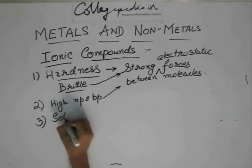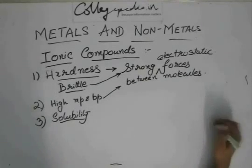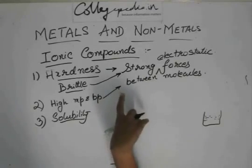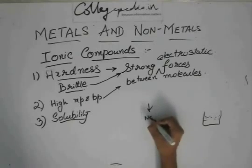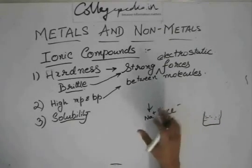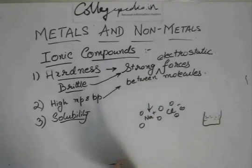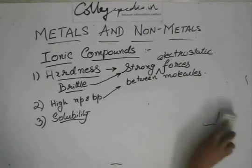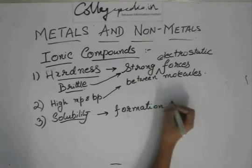The next property is solubility. Ionic compounds are soluble in water, but they are not soluble in solvents such as petrol or kerosene and other oils. They are soluble in water because as soon as they go into water, the ions separate out — Na⁺ goes one way, Cl⁻ goes another — and the ions go in between the water molecules. That is why they dissolve. They are soluble due to the formation of ions.